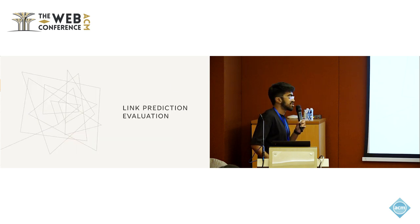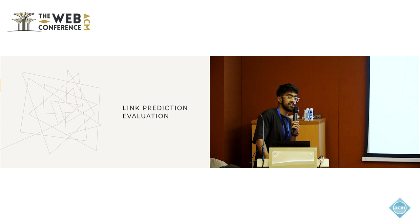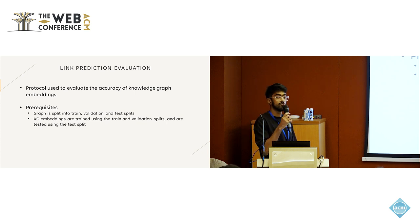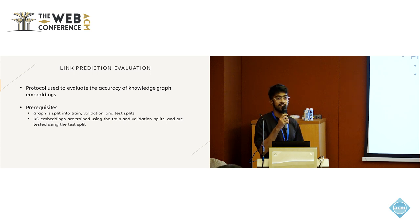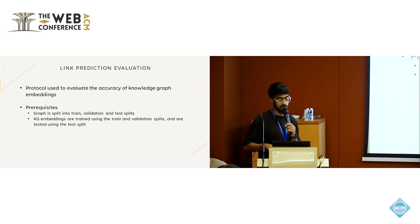How do we measure the quality or accuracy of these embeddings? We use something called link prediction evaluation. Link prediction is the process of predicting new links in the knowledge graph, and the link prediction evaluation protocol is used to evaluate the accuracy of the embeddings. The graph is split into train, validation, and test splits, and the embeddings are trained using the train and validation splits, then evaluated using the test split.